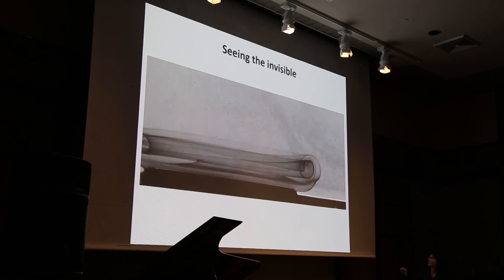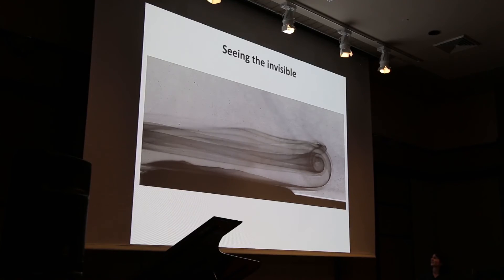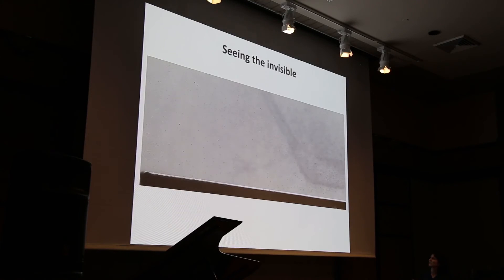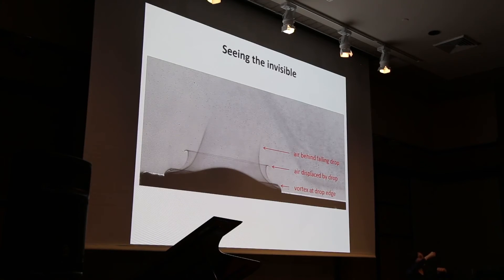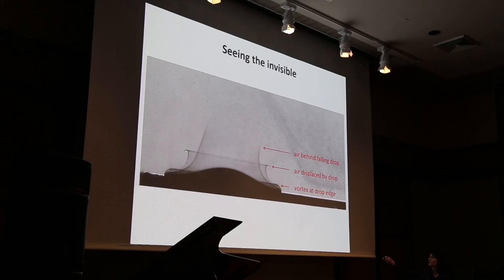We can zoom in a little bit to better see what's going on. We see these vortex rings — these curled up sheets that start to form. I can point out a couple of features: this one here is essentially the air in the wake of the drop — the air put in motion because the drop falls through it. This part is the air that was below the drop and gets pushed out as the drop hits the surface. And this part here is a small vortex ring that occurs because the drop is very rapidly spreading out.